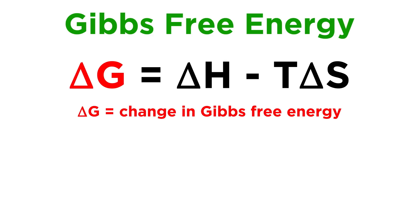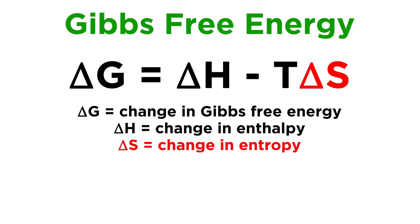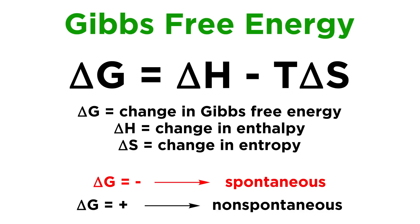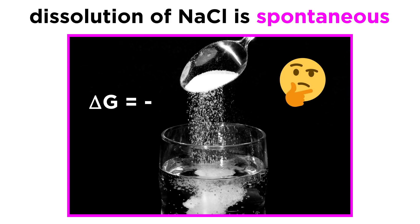We have already learned about the Gibbs free energy equation: ΔG = ΔH - TΔS, where ΔH is the change in enthalpy and ΔS is the change in entropy. And we know that a negative value for ΔG will correspond to a spontaneous process. Of course we also know that sodium chloride dissolves spontaneously in water — anyone can demonstrate this for themselves in the kitchen — so this process must have a negative ΔG value. The question is whether the spontaneity is driven by enthalpy or entropic favorability, or both.